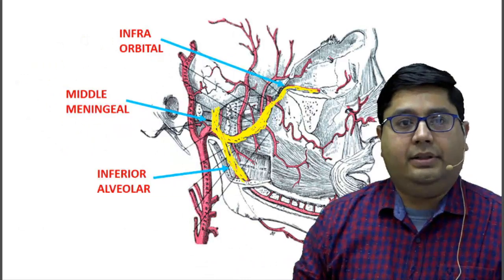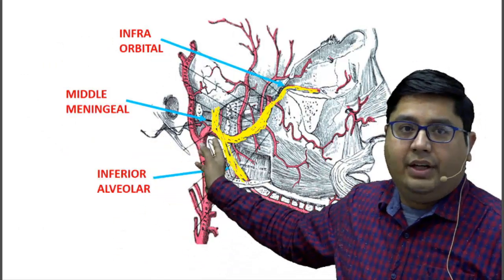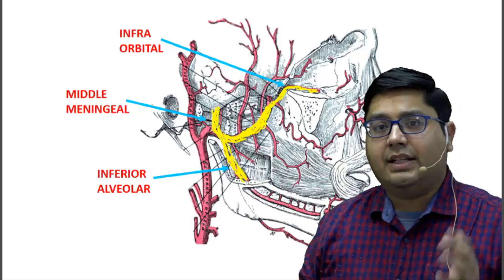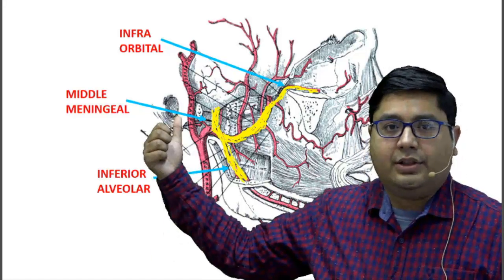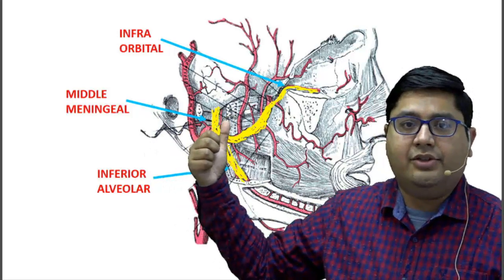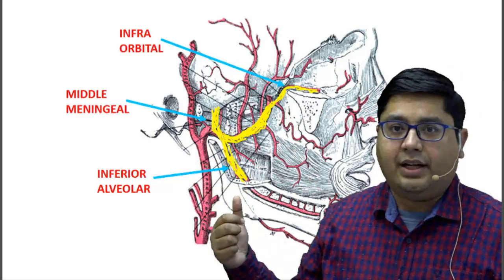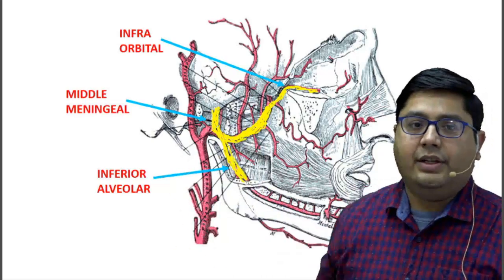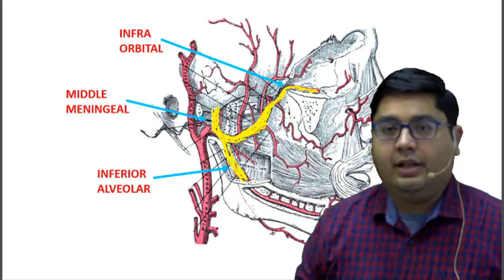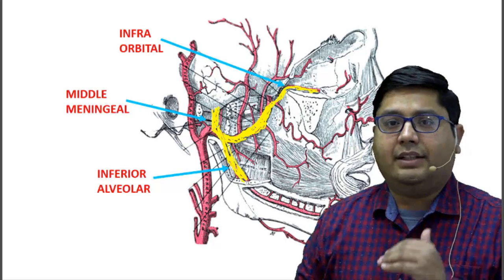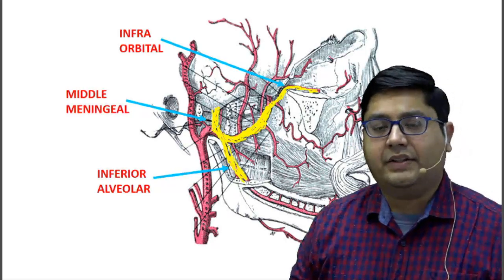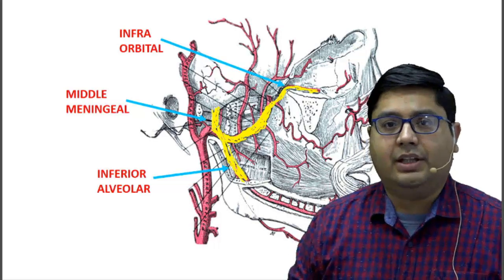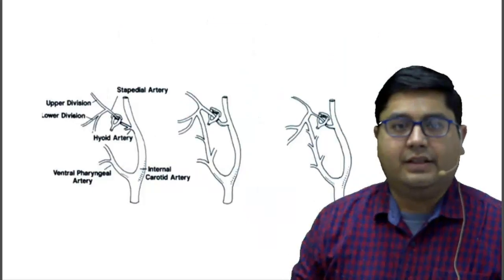The final derivatives include the infraorbital, middle meningeal, and inferior alveolar arteries. The upper division of the stapedial artery — the supraorbital part — gives rise to the middle meningeal artery's distal part. The maxillary division continues as the infraorbital artery, and the mandibular division continues as the inferior alveolar artery. This is the normal developmental pattern; now let us look at the variation relevant to this case.